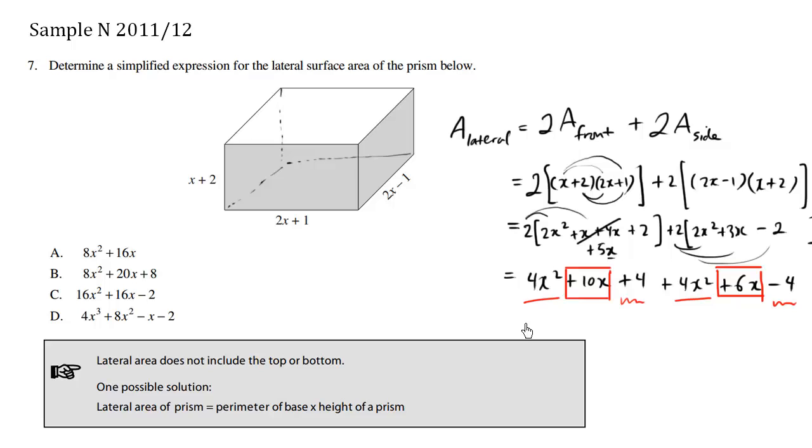So first of all, let's focus on the x squared, which are underlined. 4x squared plus 4x squared is 8x squared.